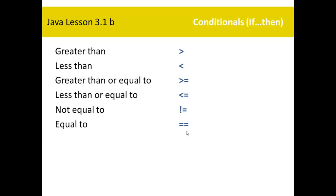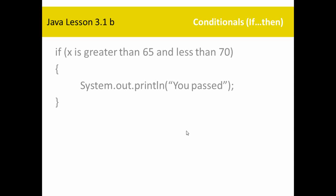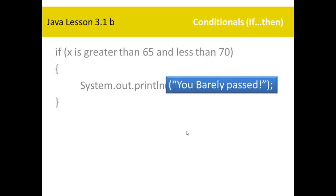Use double equals only inside an if statement for now. If you want to say 'if x is greater than or equal to 65, print something,' that's how it's done. Now, here's a trickier case: if x is greater than 65 and less than 70, print 'you barely passed' — meaning they got a 65, 66, 67, 68, or 69.